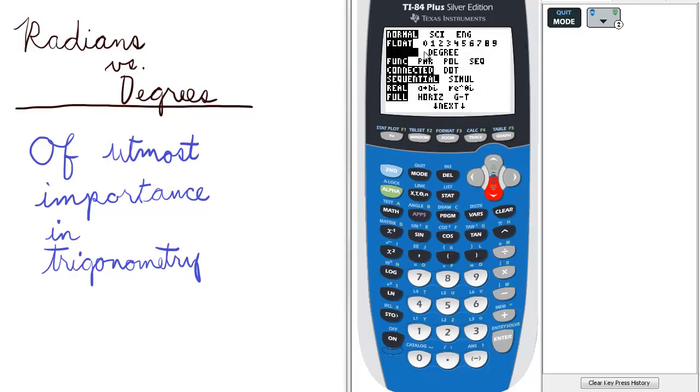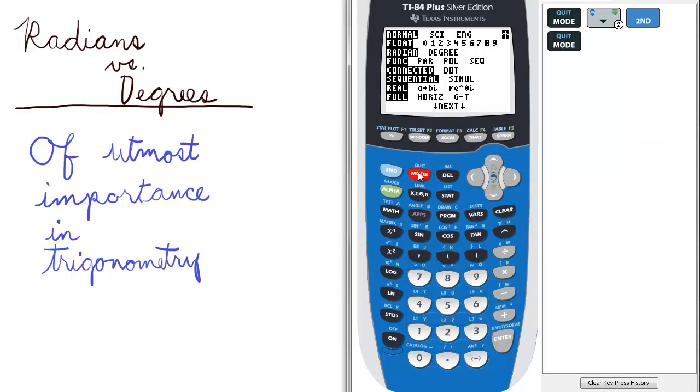The default setting of the third line in mode is radians. Now this is of utmost importance in trigonometry. So let's quit this and go to the home screen.